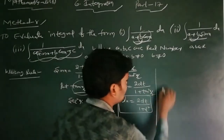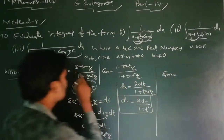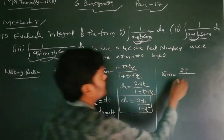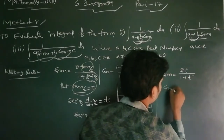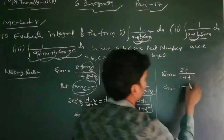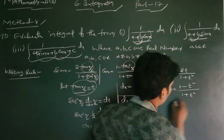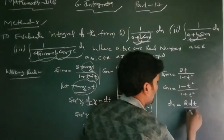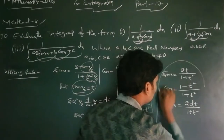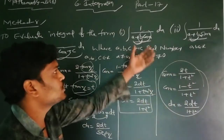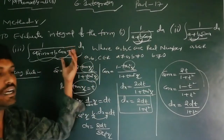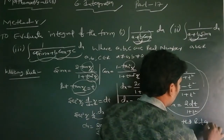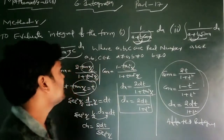With the substitution t = tan(x/2), we have: sin x = 2t / (1 + t²), cos x = (1 - t²) / (1 + t²), and dx = 2 dt / (1 + t²). These three values are substituted into the first case, second case, or third case, and then integrated using any appropriate method. This is Method A.